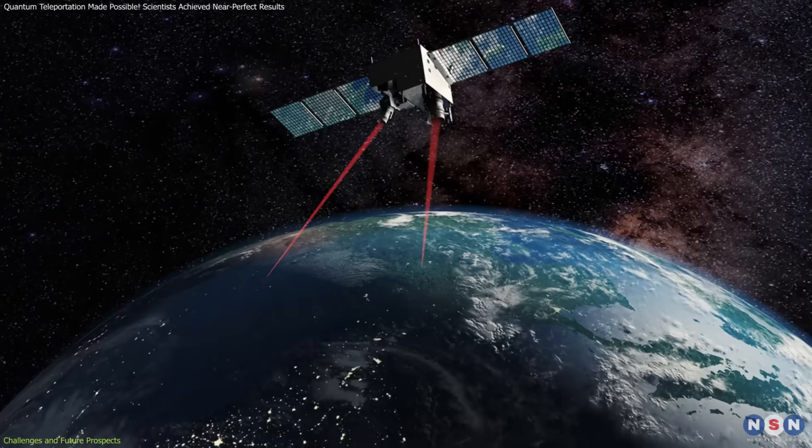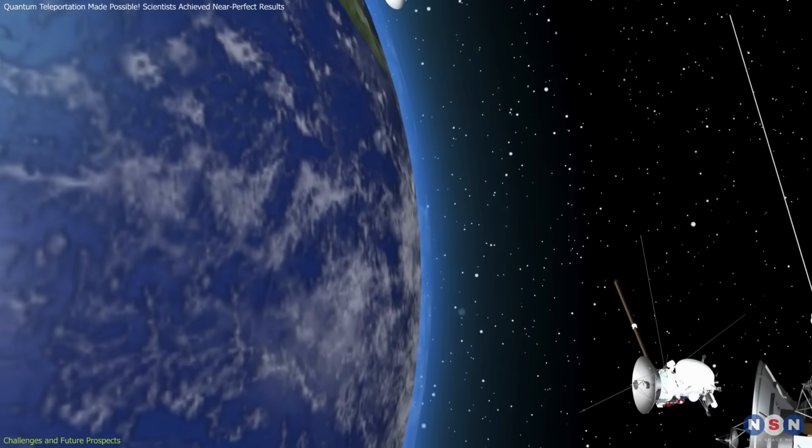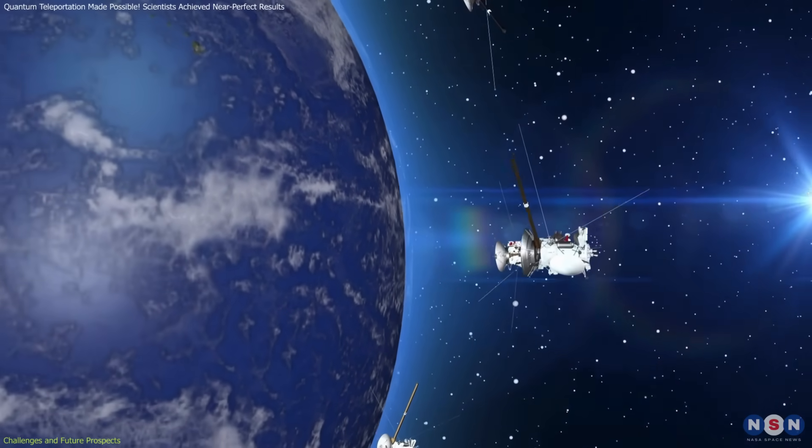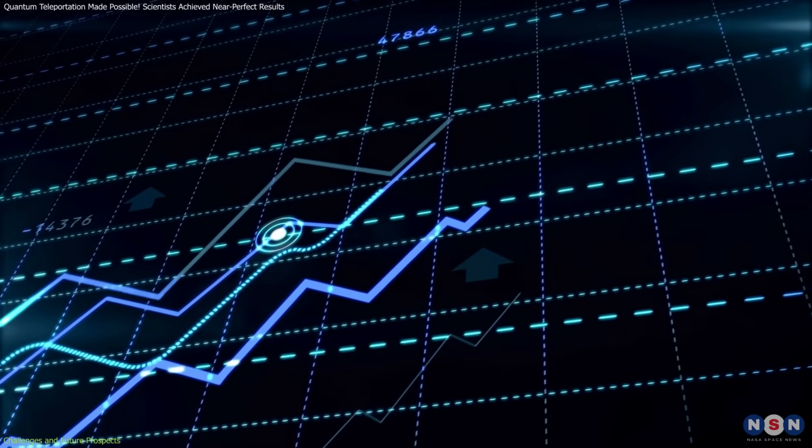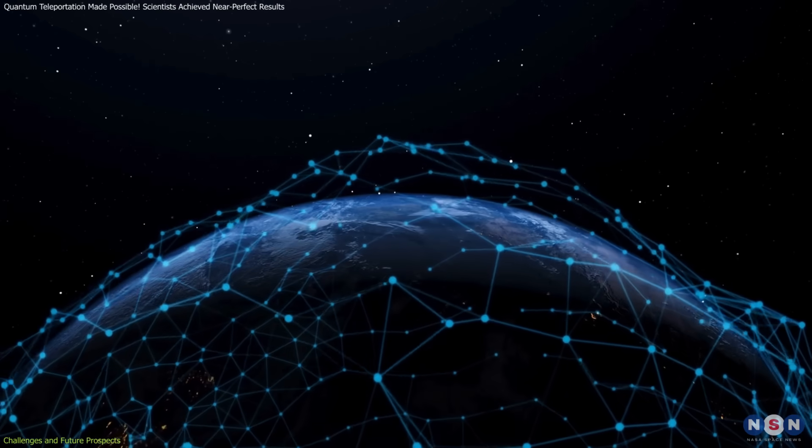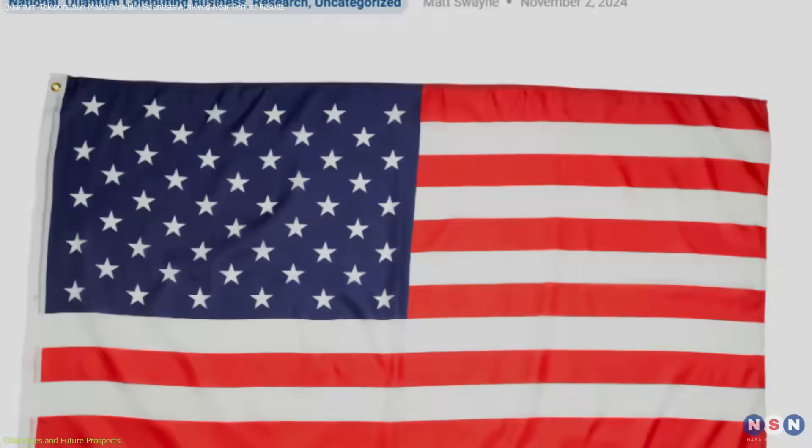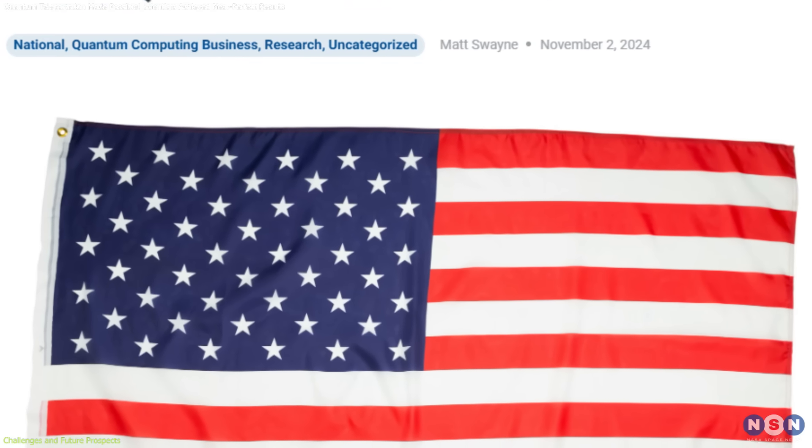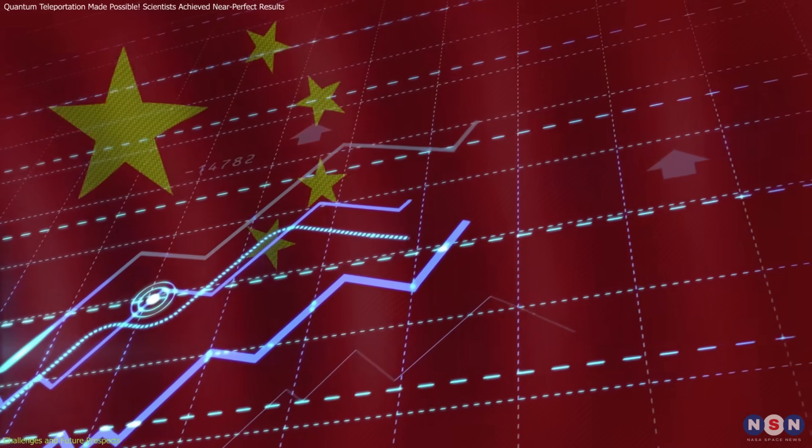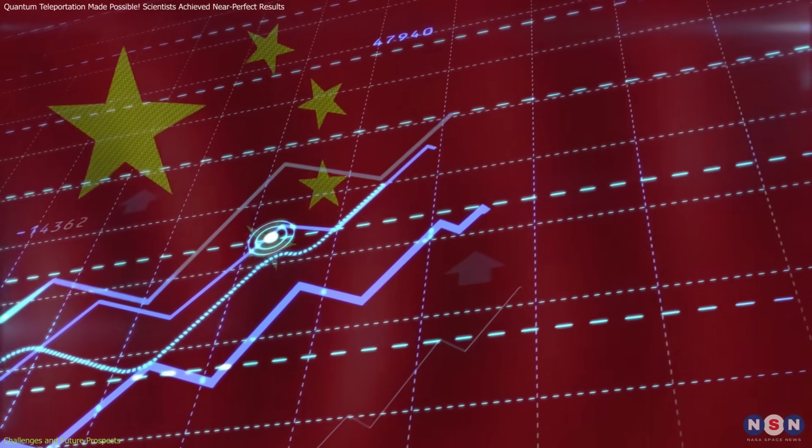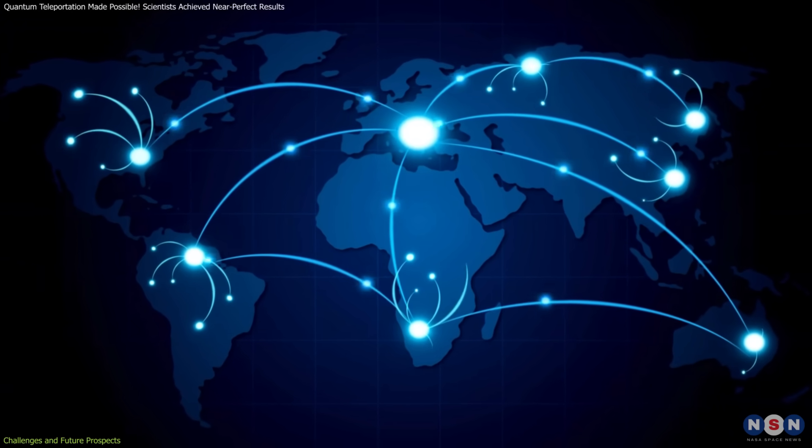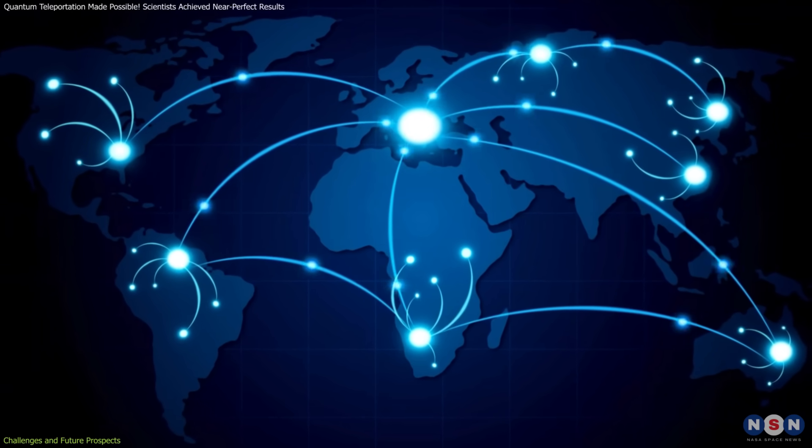Similarly, satellite-based systems like Micius are limited by the availability and cost of launching and maintaining satellites. Cost is another significant barrier. Building and sustaining quantum infrastructure is expensive, with most projects heavily reliant on government funding. For instance, the U.S. National Quantum Initiative has allocated over $1 billion to quantum research, while similar investments are being made by China and the European Union. Ensuring that these technologies remain accessible and equitable will require careful planning and collaboration.